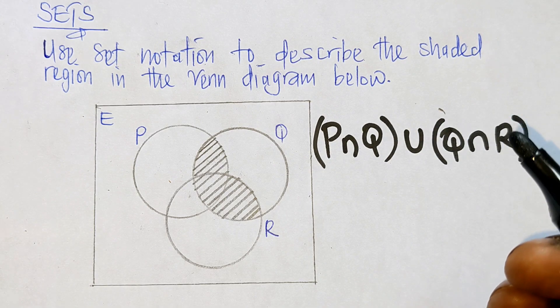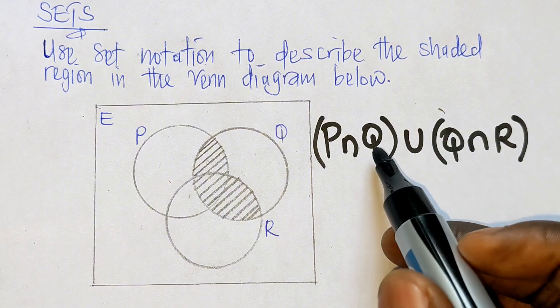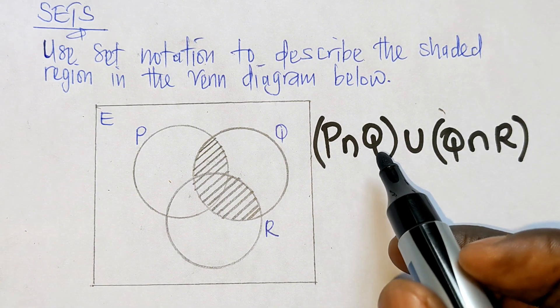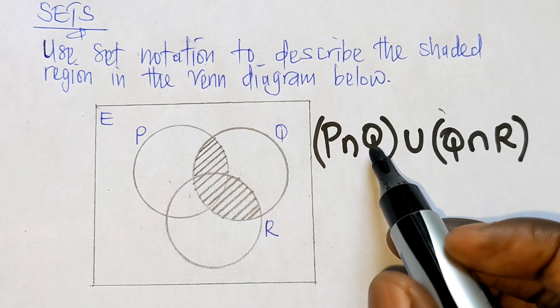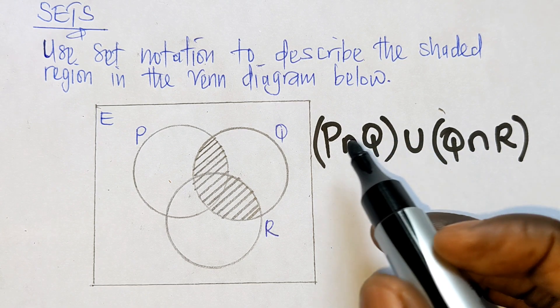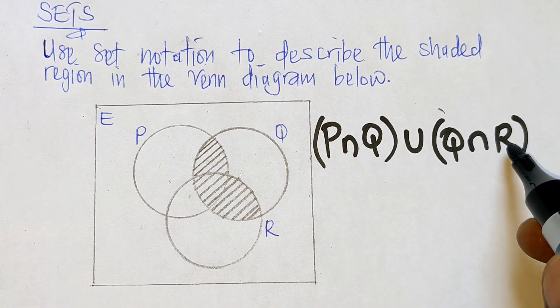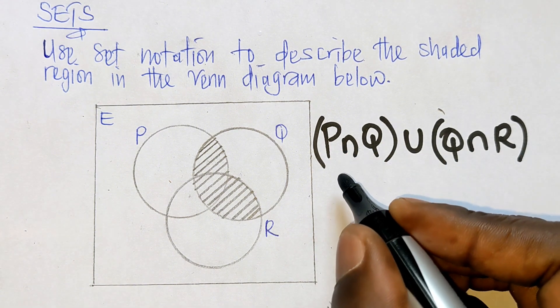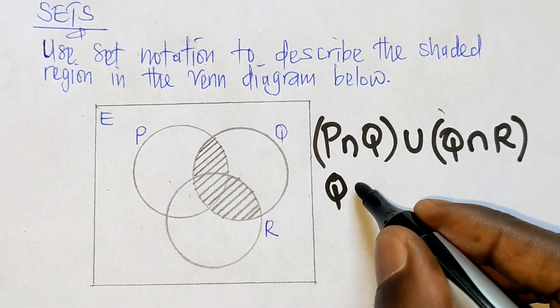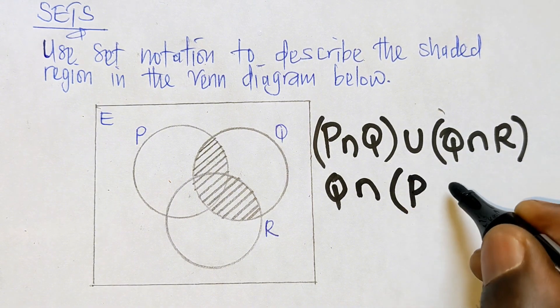So this just simply means that we can factor out Q. Since Q is appearing in both these two brackets, we can factor out Q and also intersection. And then in brackets we are going to remain with P union R. So this is going to be written as follows: Q∩(P∪R).